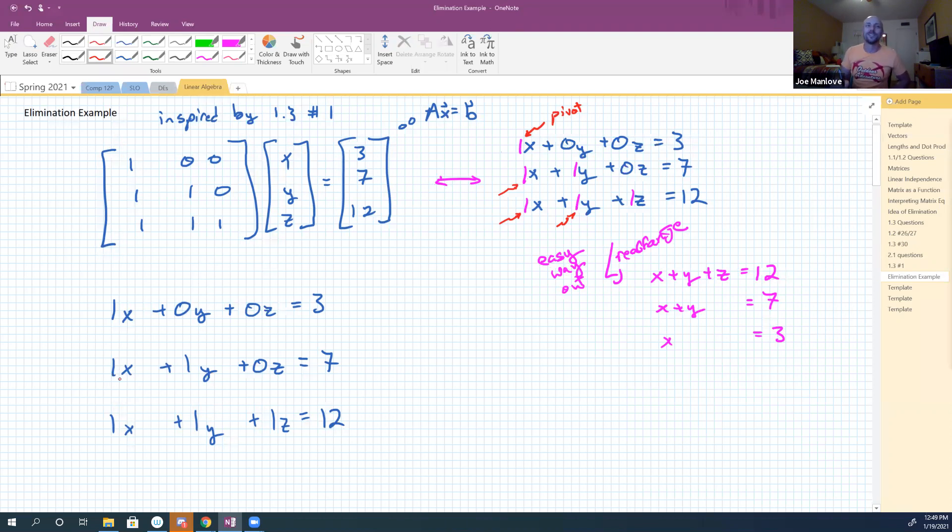All right, so what I want to do is I want to take this one x and I want to add minus one x to it. So I'm going to take this first row, I'm going to multiply that whole first row by negative one and add it. So this is going to be minus row one that I'm going to put here in red. So that's going to be minus one x minus zero y minus zero z and minus three. You guys with me on that?